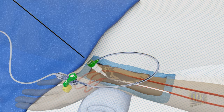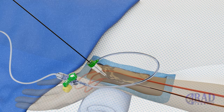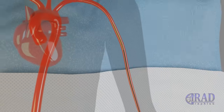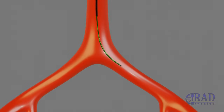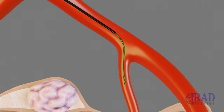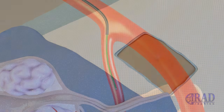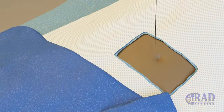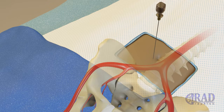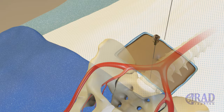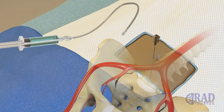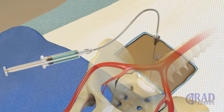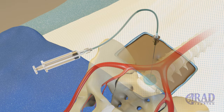A combination of catheter and wire is advanced from the left radial artery to the aorta and subsequently to the internal iliac artery. Once the tip of the catheter is placed at the origin of the internal iliac artery, a long small gauge needle is advanced through the anterior abdominal wall to the anterior aspect of the lumbar vertebra to perform hypogastric nerve block.